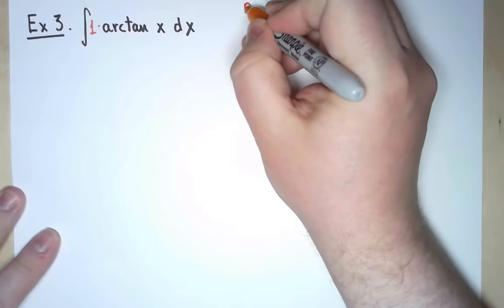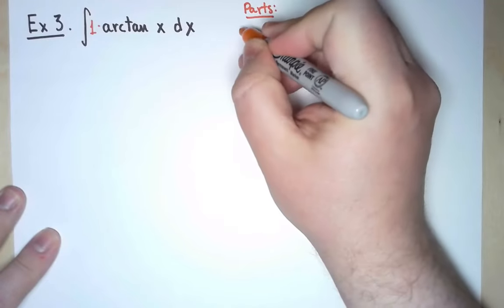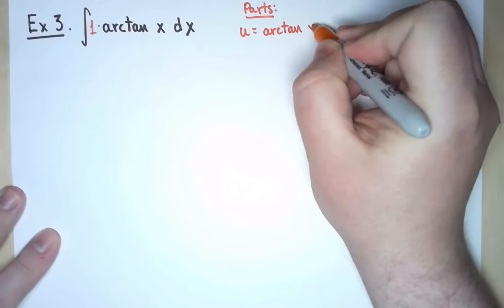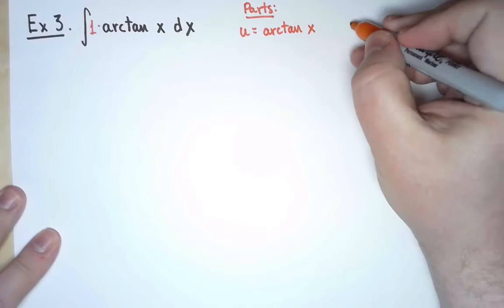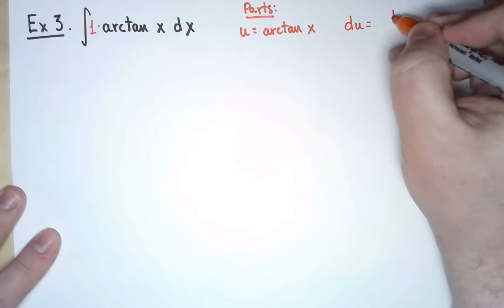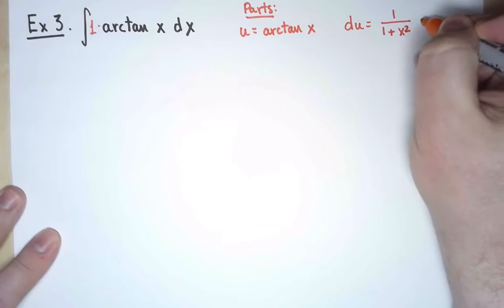What happens if I try integration by parts and I take u to be arctan x? In that case, du should be the derivative, 1 over 1 plus x squared, times dx.